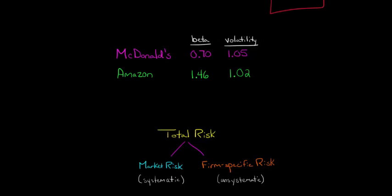What beta is measuring is the market risk of McDonald's. This 0.7 is telling us the percentage increase or change in McDonald's stock return given a 1% change in the return of the market portfolio. That's the systematic or market risk of McDonald's, the part that cannot be diversified away. This is McDonald's relationship to the overall market. That's what beta captures, the systematic risk.